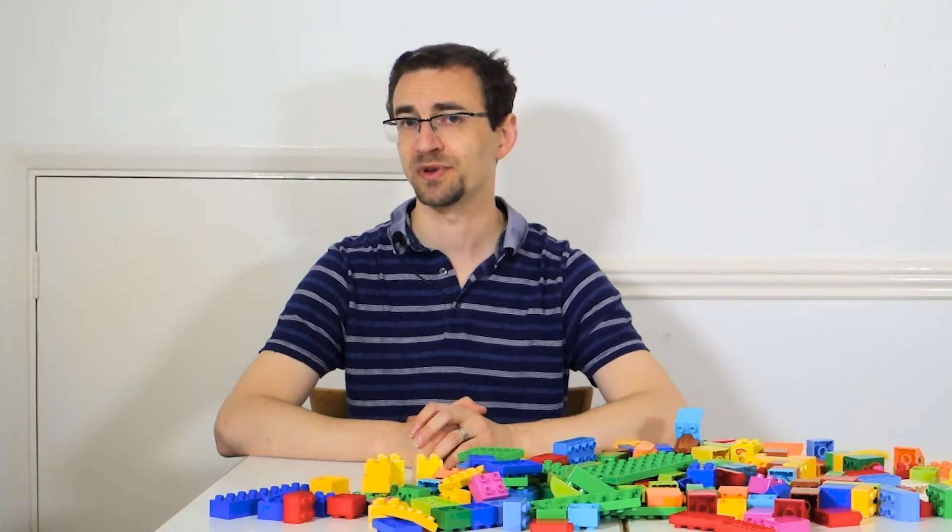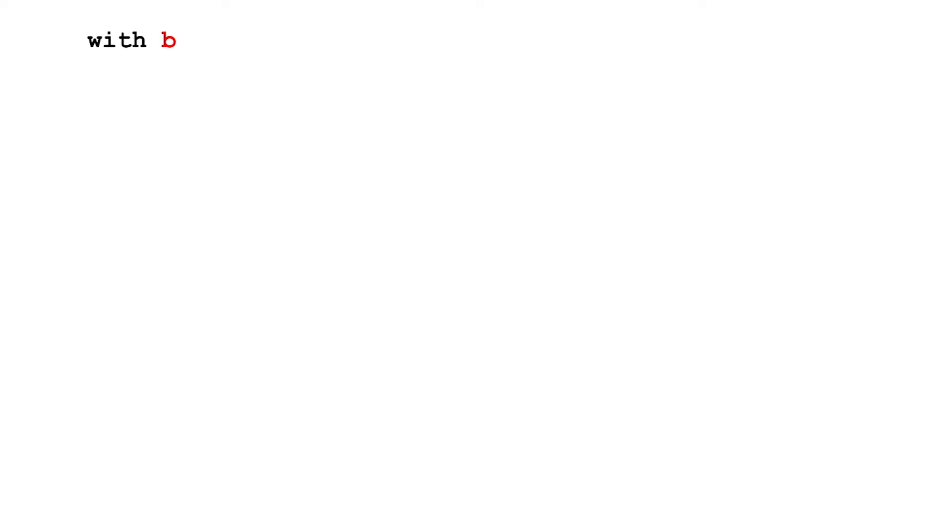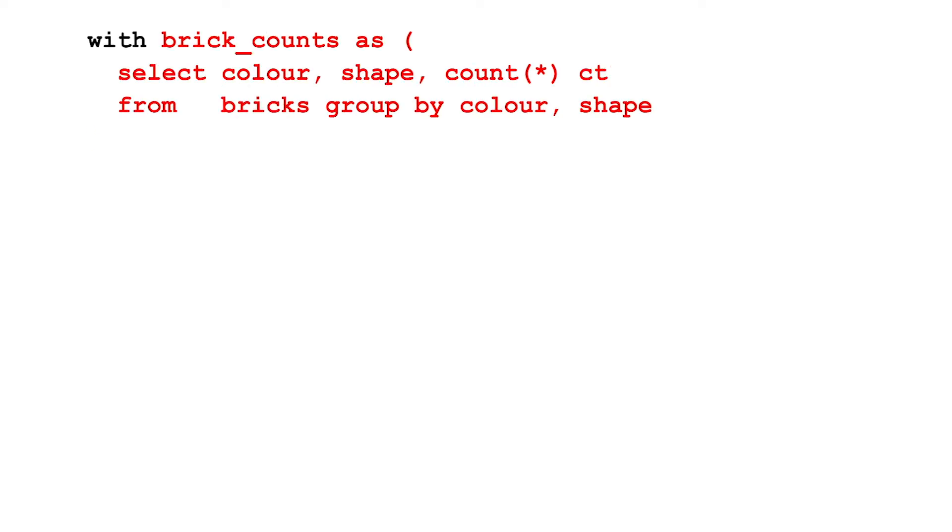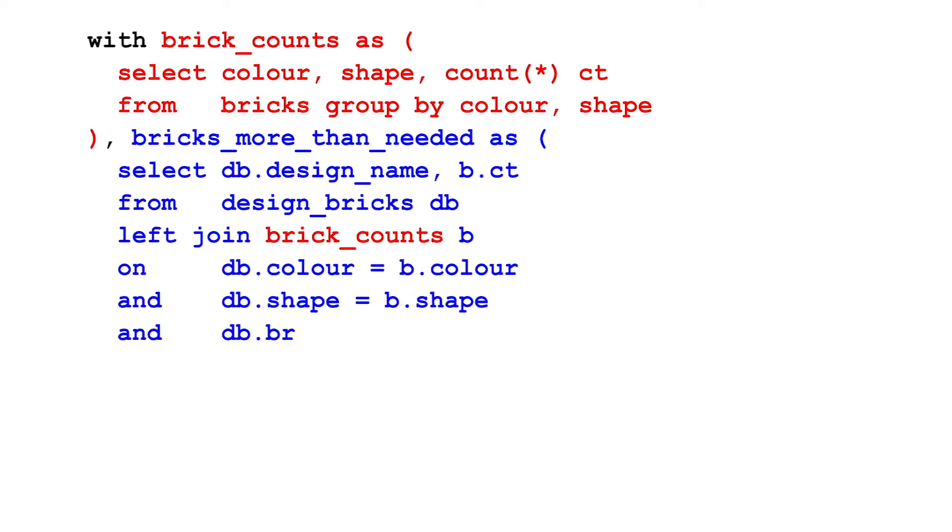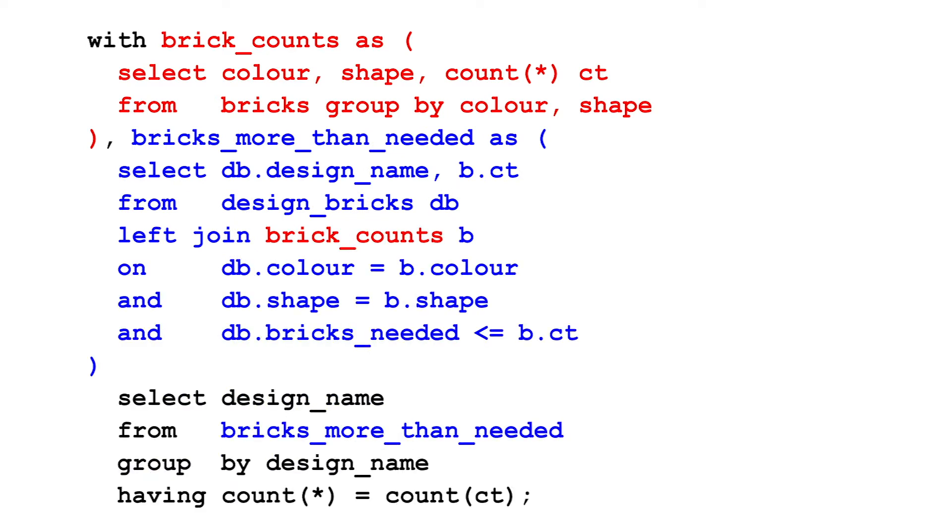So you can break down the previous query into three separate units. First, you count the bricks of each type. Then join this to the bricks needed for each model. And finish by checking which designs you have all the bricks needed of each type. Not only is this easier to write and understand later, it's also easier to debug.